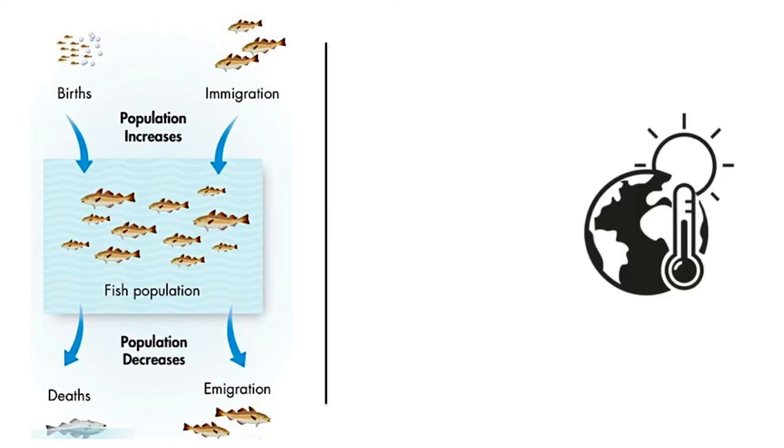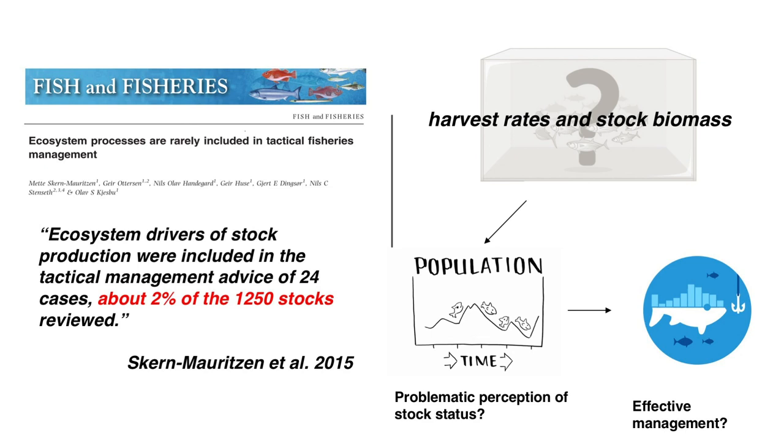We all know from those climate change talks that ocean warming means the environment is actually changing. That kind of violates this key assumption of traditional stock assessment — environment is not at equilibrium, but is actually shifting from one state to another. What happens to traditional stock assessment, which only focuses on harvesting rate and stock biomass? As this 2015 paper that many of you may have read showed, about 2% of global fish stocks actually incorporate any type of environmental information in the stock assessment. This often results in a problematic biased perception of stock status, which potentially leads to ineffective management of fishery stocks.